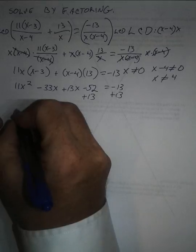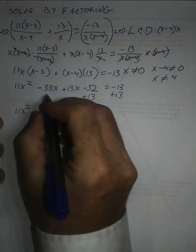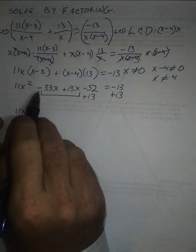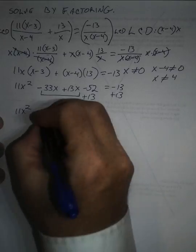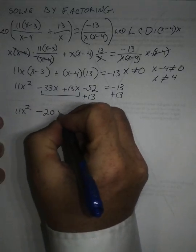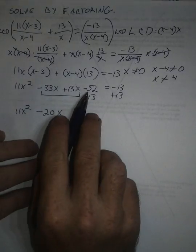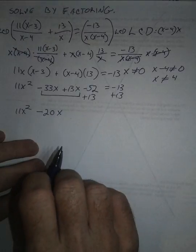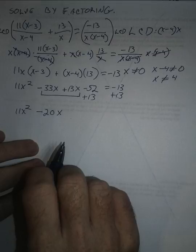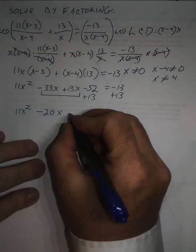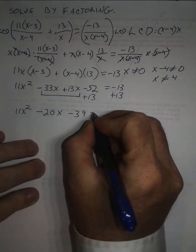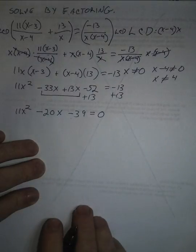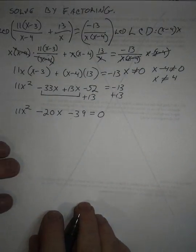Here I've got 11x². Combining these two terms, negative 33 plus 13 is minus 20x. And then this here is 52 minus 13, so that's going to be minus 39. Minus 39 equals 0.